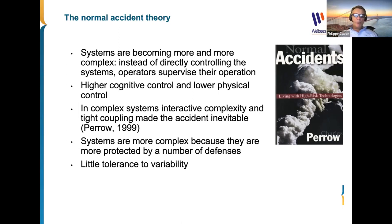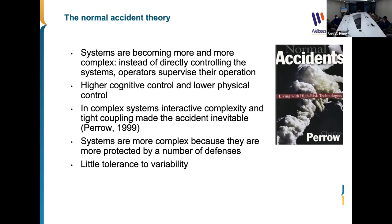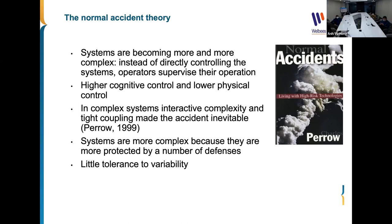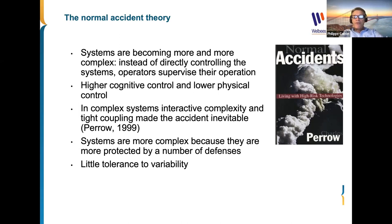This relates to the famous butterfly effect — a small effect may produce big consequences, sometimes even remotely, not at the same place. The idea is also that systems are more complex because they are more protected by many defenses, which makes them very complex and difficult to predict, with little tolerance to variability: a small variability may provoke large consequences.